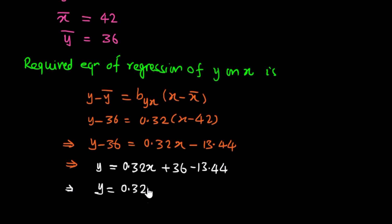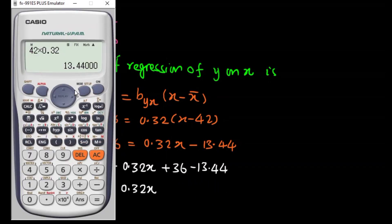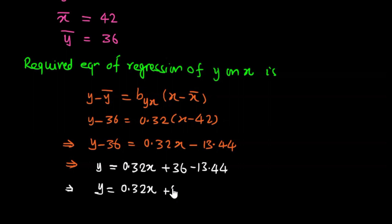So y minus 36 equals 0.32x minus 13.44. Rearranging: y equals 0.32x plus 36 minus 13.44, which gives y equals 0.32x plus 22.56. This is the required regression equation of y on x. I hope you understood this short question. I will see you in the next video, bye bye.